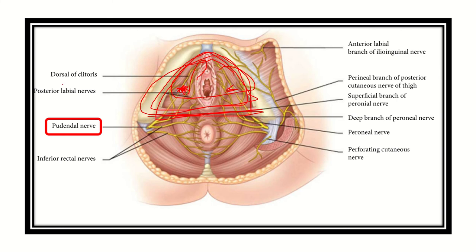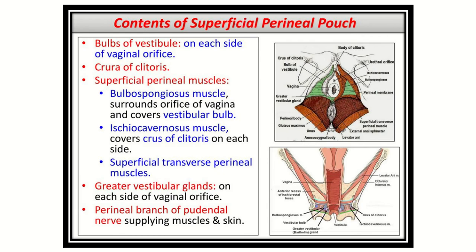The contents of the superficial perineal space include: dorsal nerve of the clitoris, posterior labial nerve and vessels, transverse perineal muscles, and the vulvo-Bartholin gland (also called the vulvo-urethral gland or greater vestibular gland), which are located in this area.